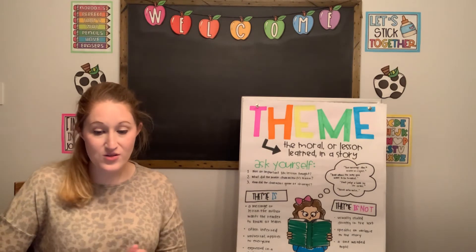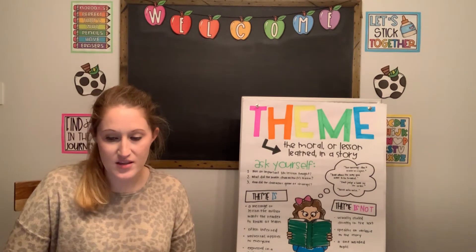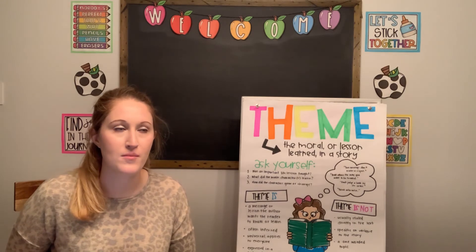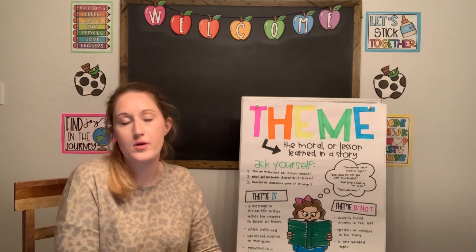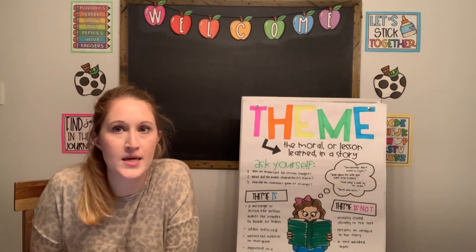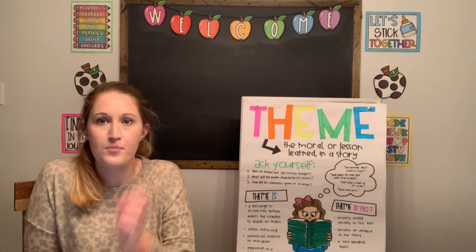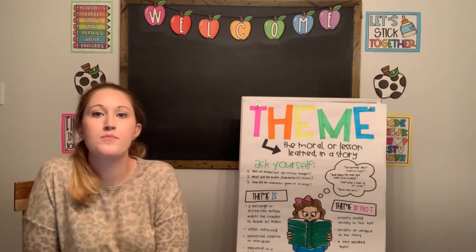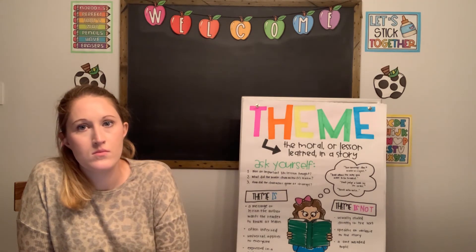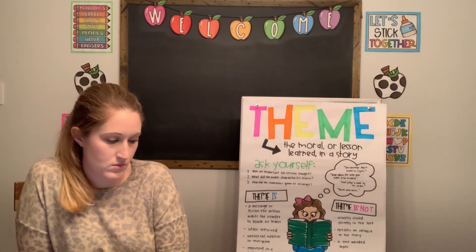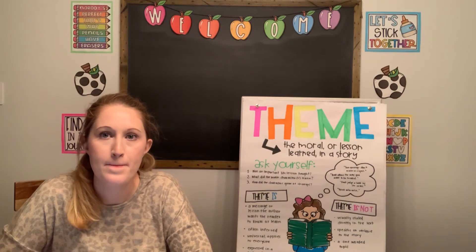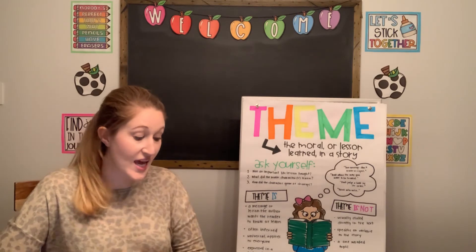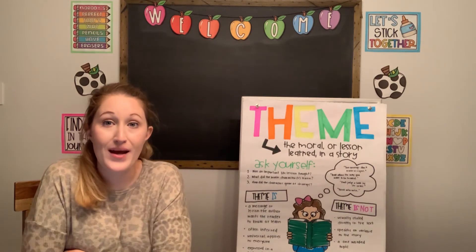All right, so there's our story. What happened in this story? Let's see if we can retell the story. What happened at the beginning? Hare and tortoise are hanging out, just kind of talking, and hare challenges tortoise to a race.